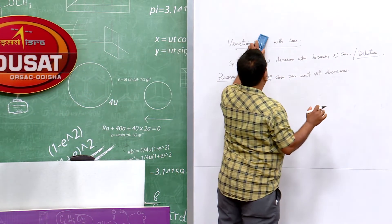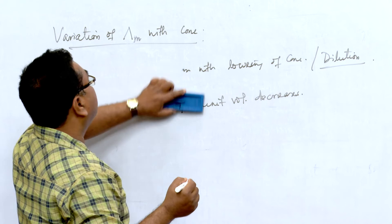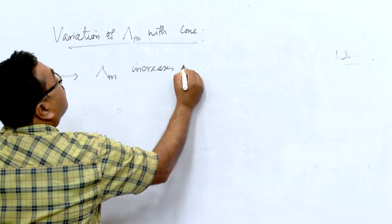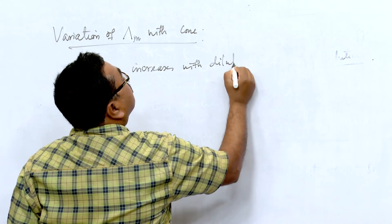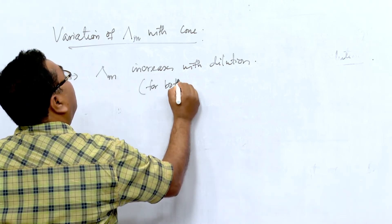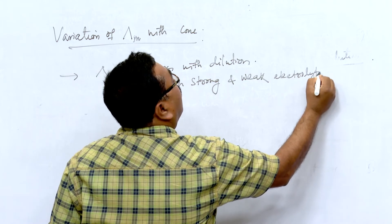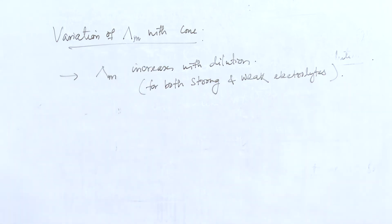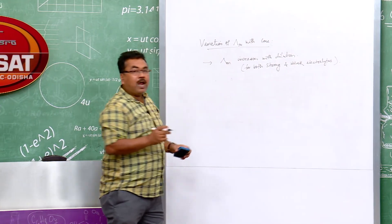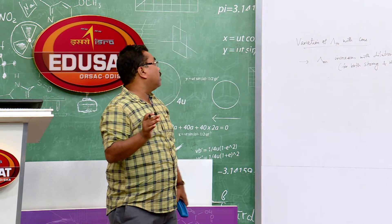Now for variation of molar conductivity λ_m with concentration: λ_m increases with dilution — this is true for both strong and weak electrolytes. We shall study this better by making a graph.